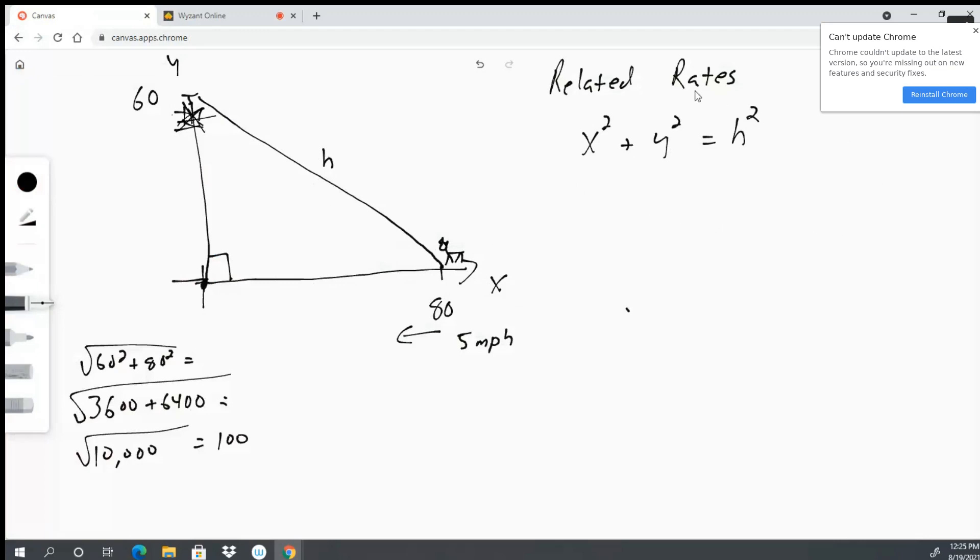Related rates problems are nothing more than implicit differentiation with respect to a new variable which is time. Before we did implicit differentiation with respect to x and we appended the dy/dx in the appropriate places. Here we're just introducing a whole new variable called time.